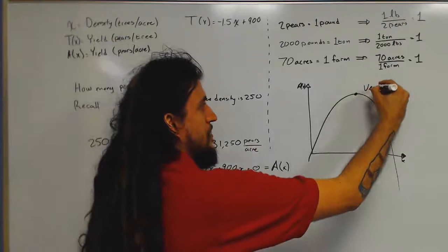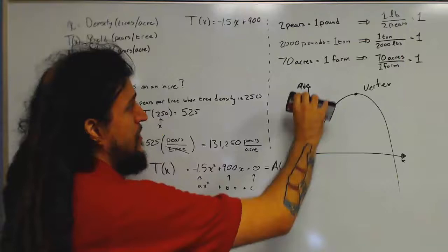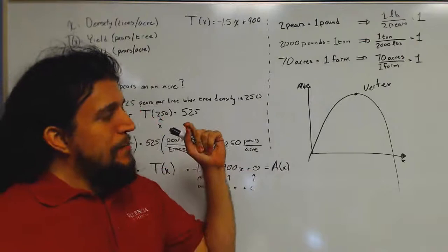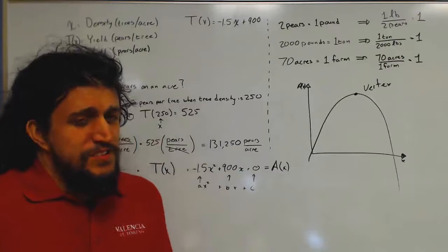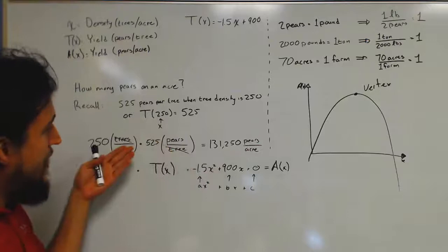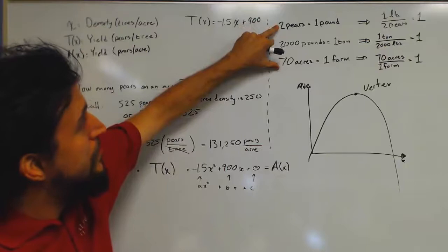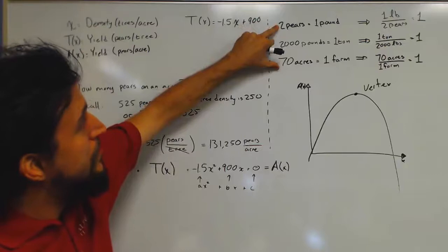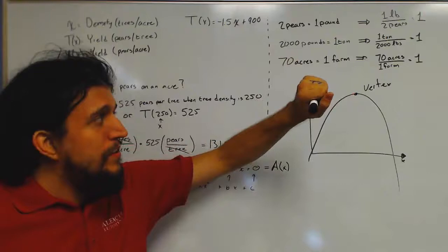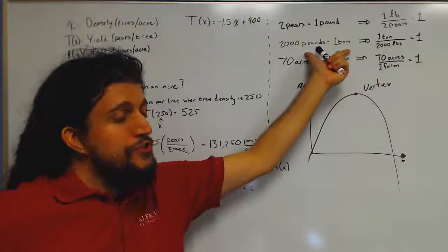And so finally, with the last part of the problem, it's kind of like a bonus section where they want you to devise an equation that gives you the yield for the entire farm in terms of tons for the entire farm. So you have to do a little more of this unit cancellation stuff. I made a little table here that relates all these variables to each other. So they specifically say that each pair is one half of a pound. Well, I go ahead and say that two pairs equals one pound.